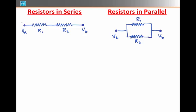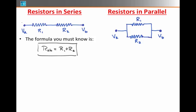Again, we have two cases to consider: resistors in series and resistors in parallel. The formula you must know is that the equivalent resistance for two resistors put in series is that they have an equivalent resistance of R equals the sum of the two resistors.